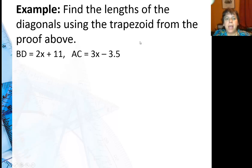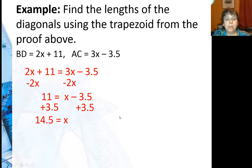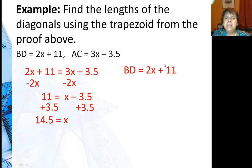Here I don't even have the trapezoid drawn, but I'll tell you one diagonal is 2x − 11 and the other diagonal is 3x − 35. So you set them equal. Subtract your x's from both sides, then add 3.5 to both sides, so x is 14.5. But always remember, you've got to find not just x but what I asked for, which are the lengths of the diagonals. BD is 2x − 11, so I can take that 14.5 and substitute it.